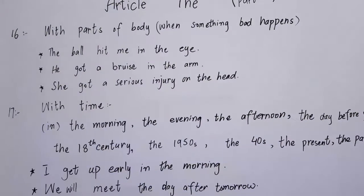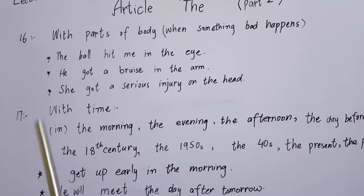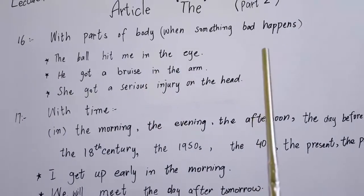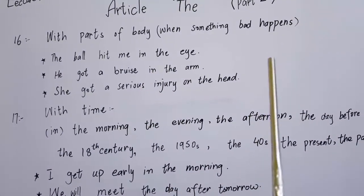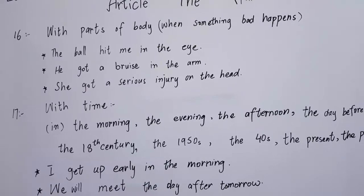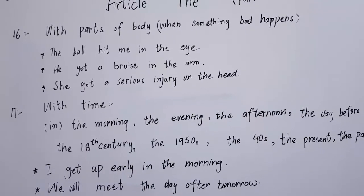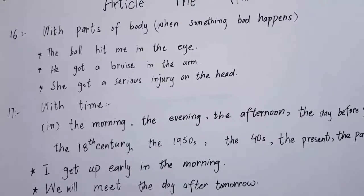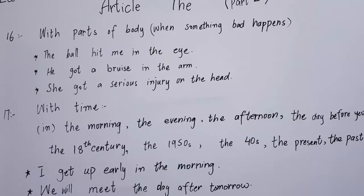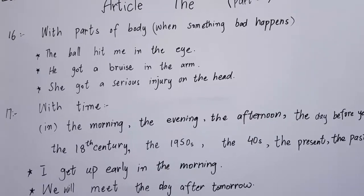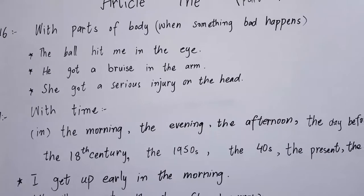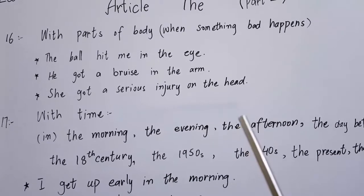Rule number 16: 'the' is used with parts of the body when something bad happens to them. For example: 'The ball hit me in the eye.' 'He got a bruise in the arm.' 'She got a serious injury on the head.'